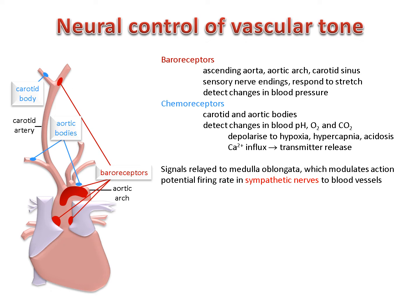Signals from baroreceptors and chemoreceptors are relayed to the medulla oblongata in the brain, where they regulate the output of the autonomic nervous system. The baroreflex is a rapid but short-term response to a change in blood pressure. Its most important role is in responding to a sudden fall in blood pressure — for example, when you stand up or if you lose a lot of blood. It does activate following a rise in blood pressure, but it loses effectiveness if hypertension is maintained.